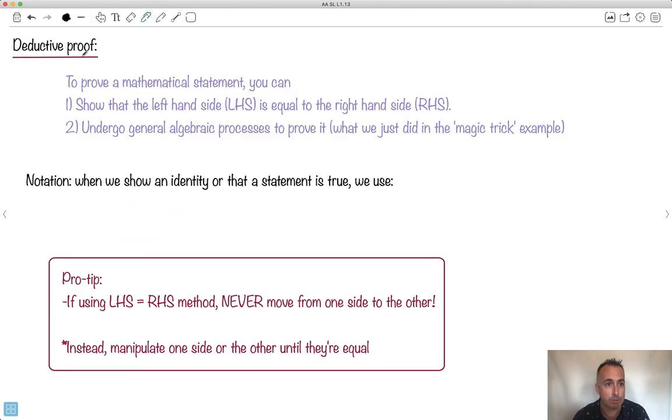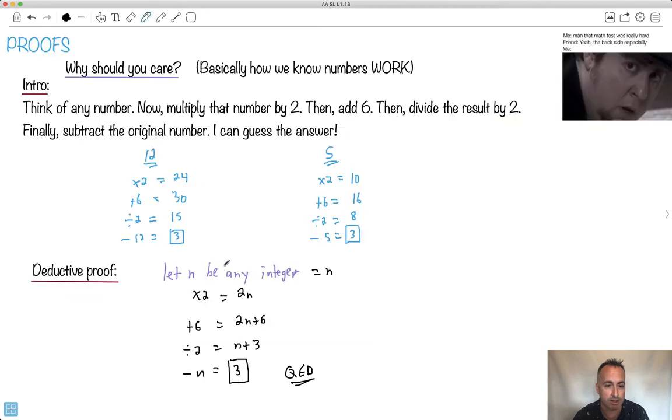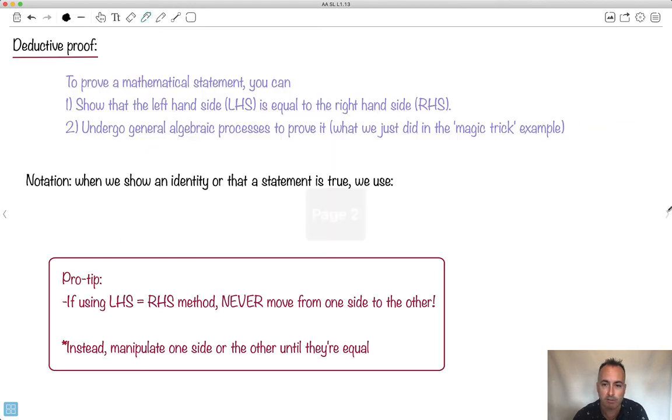So how do we do a deductive proof? Well to prove a mathematical statement there's a couple ways of doing it. You can show that the left-hand side, I'm going to write LHS for short, you can show that the left-hand side is equal to the right-hand side. I'll show you those later. Or you can just undergo some generic or general algebraic processes to prove it. That's what I just did in this magic trick example. Right here I did like a formal sort of deductive proof here.